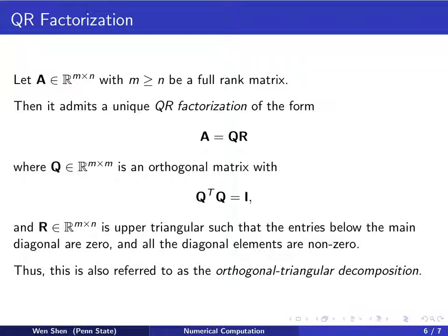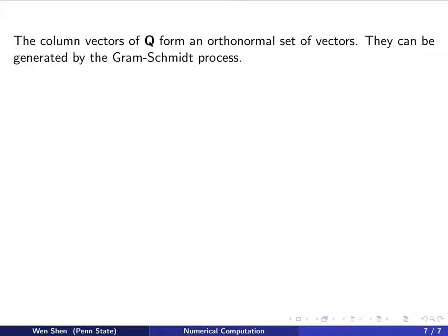Since the Q matrix is orthogonal, this method is also known as the orthogonal triangular decomposition. So Q is an orthogonal matrix. That means the column vectors of Q, they form an orthogonal set of vectors. And these vectors can be generated by the standard Gram-Schmidt process. We have came across this process earlier in the study of polynomials and orthogonal polynomials.